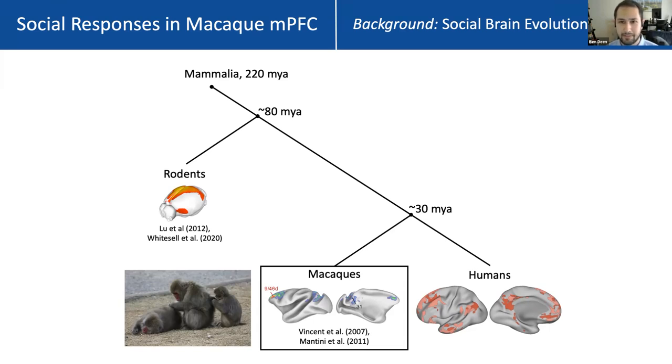At least to my mind, there's compelling evidence that macaques at least understand basic mental states of other primates — things like percepts and desires — and make action predictions based on those.